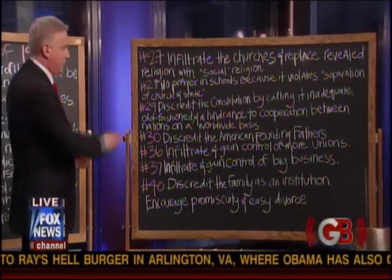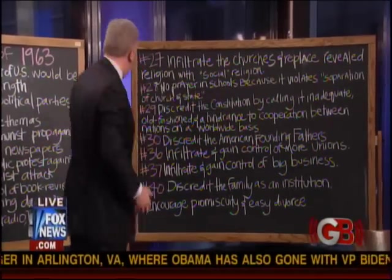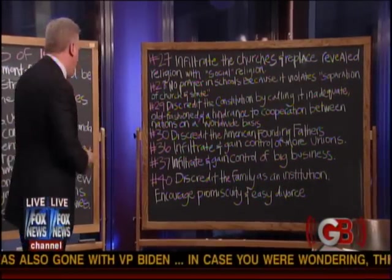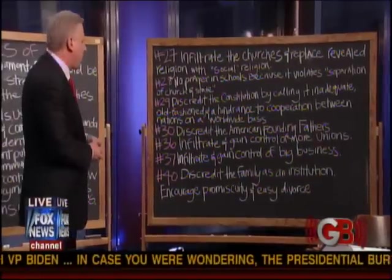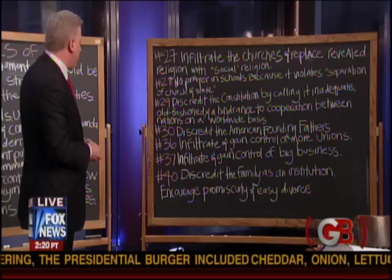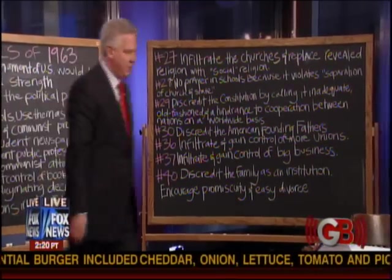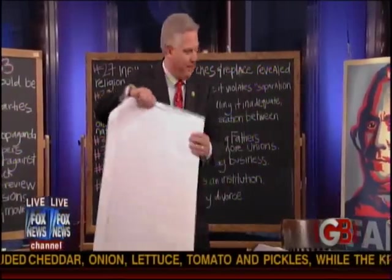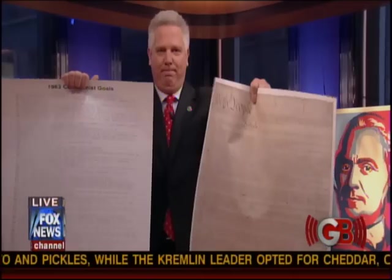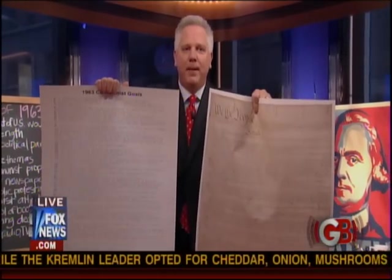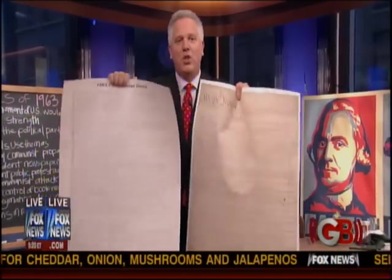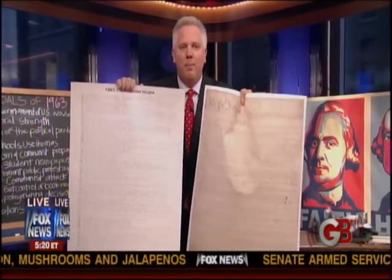Number 30: discredit the American founding fathers. What are we doing on this show? Trying to restore them? Number 36: infiltrate and gain control of more unions. Number 37: infiltrate and gain control of big businesses — what do you think the Tides Foundation is? Number 40: discredit the family as an institution, encourage promiscuity and easy divorce. These are the goals from 1963. This is 1791. Which one, America? It's a charter of negative liberty, says our president. Which one must you choose?